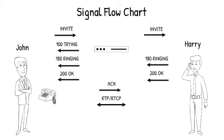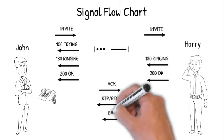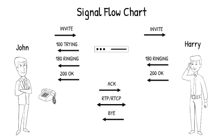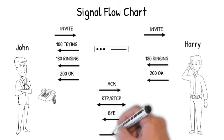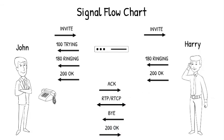Now if any one of them ends the call, a BYE signal is sent to the opposite user. Let's say Harry ends the call — the BYE signal will be initiated and sent to John's phone. John's phone will reply with 200 OK, which will close the dialogue.